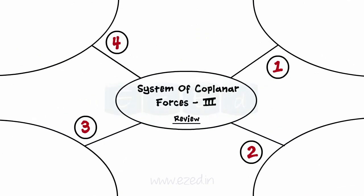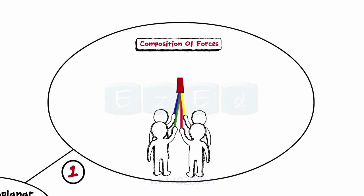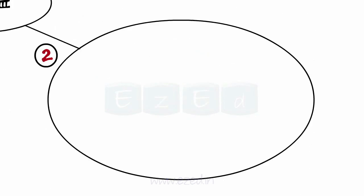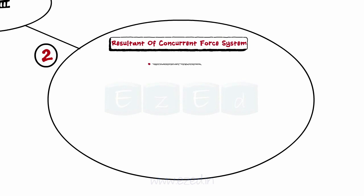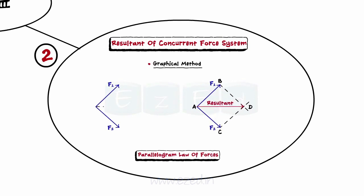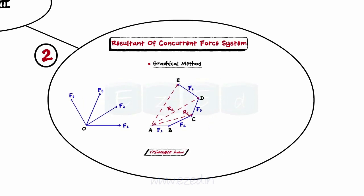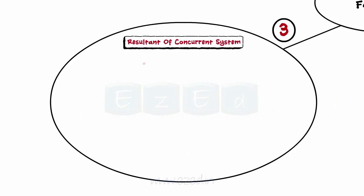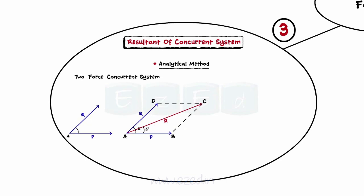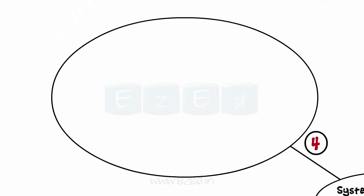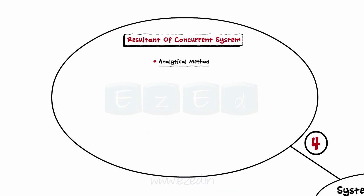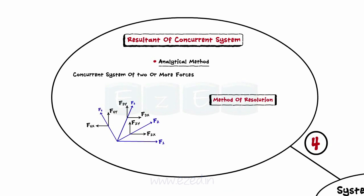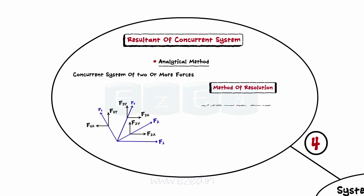Let's have a quick review of what we have studied in this lecture. Composition means to merge the forces acting in a system into a single force, which has the same effect as all the forces acting together. Such a single force is called the resultant of the system. We learned how to find the resultant of a concurrent force system by the graphical method, using the parallelogram law primarily, as well as the derived triangle law and polygon law. We then learned to find the resultant using the analytical method — for a two-force concurrent system using the mathematical expression of parallelogram law, and for two or more forces using the method of resolution to avoid tedious repetition of parallelogram law.